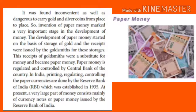Paper Money: It was found inconvenient as well as dangerous to carry gold and silver coins from place to place. So, the invention of paper money marked a very important stage in the development of money. The development of paper money started on the basis of storage of gold, and receipts were issued by the goldsmiths for these storages. These receipts of goldsmiths were a substitute for money and became paper money. Paper money is regulated and controlled by the central bank of the country.